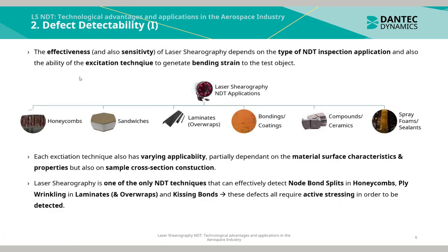The effectiveness and sensitivity of Laser Shearography depends on the type of NDT inspection application and the ability of the excitation technique to generate bending strain in the test object. There are six main Laser Shearography NDT inspection applications: the inspection of honeycombs, sandwiches, laminates and composite overwraps, bondings and coatings, compounds and ceramics, and spray foams and sealants.